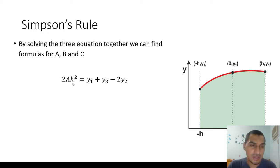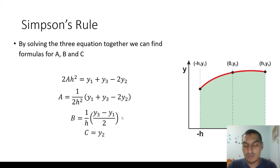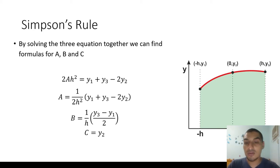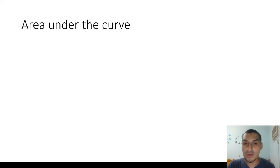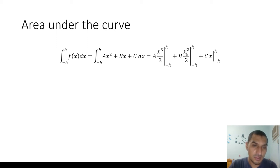From solving the system, we can get a as 1/(2h²) multiplied by a bracket expression, b can be found similarly, and c is found to equal y2. Now when we calculate the area, the integration of f(x)dx from negative h to h equals the integral of ax² + bx + c, which gives ax³/3 + bx²/2 + cx, evaluated from negative h to h.